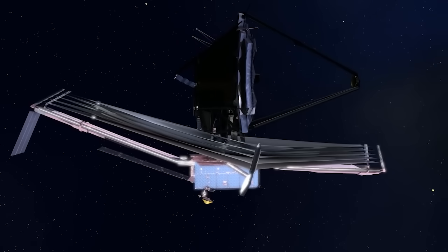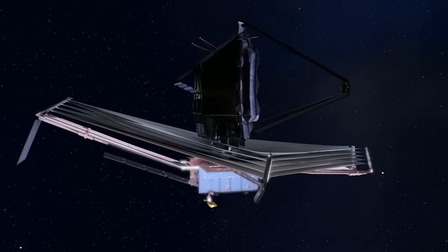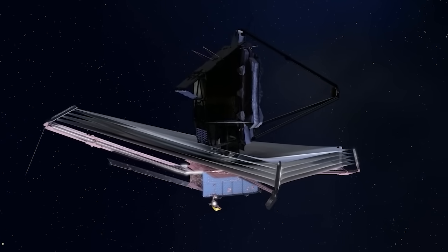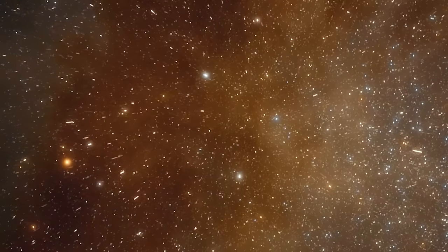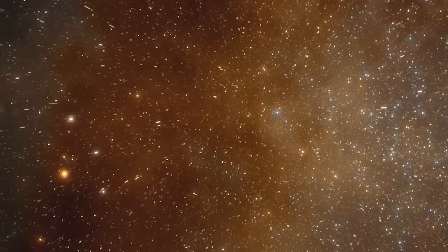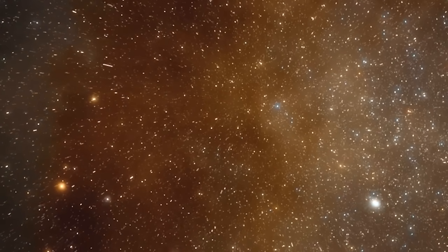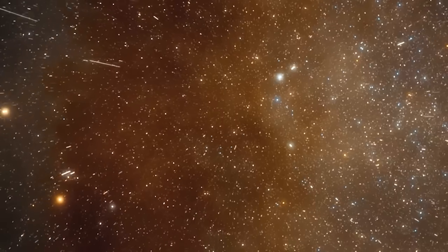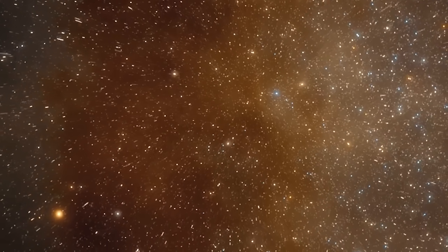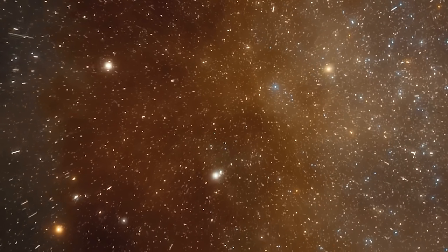The James Webb, because it sees in the near and mid-infrared, can not only go further back in time and observe the first galaxies in formation, but it can also inspect galaxies and other objects that appear to Hubble hidden behind thick clouds of dust.